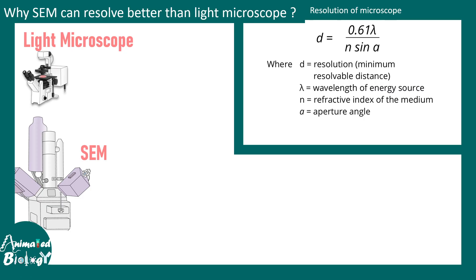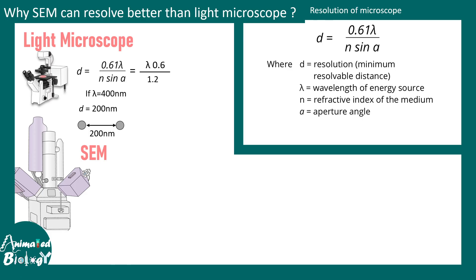The light microscope limit of resolution D is given as 0.6 lambda divided by NA, or N sine alpha — this is the resolution formula. For example, a microscope operating at a 60x objective would have an NA of roughly 1.2 to 1.4. Using NA = 1.2 and lambda = 400 nm, the limit of resolution is about 200 nanometers. That means if two points are 200 nanometers apart, one can resolve them; if they are closer, nothing can be resolved.